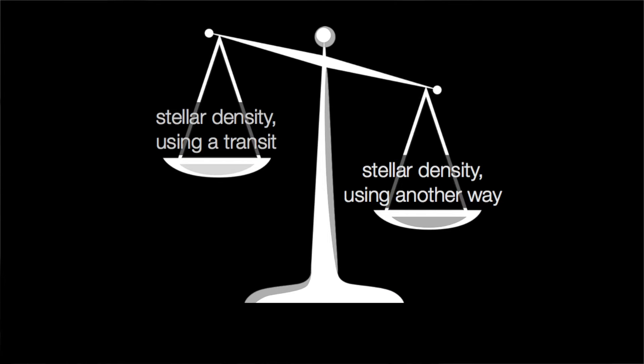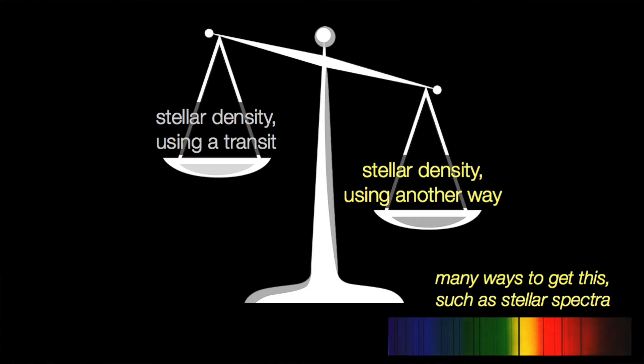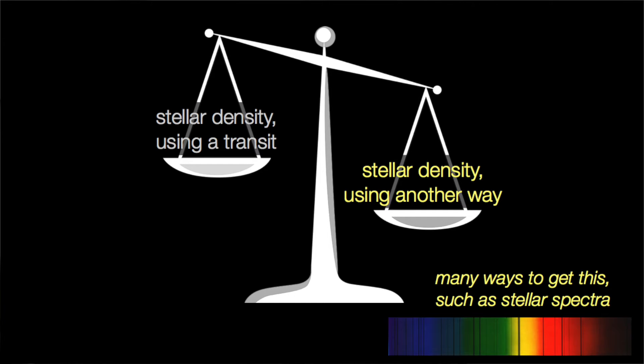So what is it? At its very core, we can define astrodensity profiling as comparing the density of a star as measured from the shape of a transit light curve versus some independent measure. Starting with the independent measurement of stellar density, there are all sorts of ways that astronomers can use to get a handle as to what the density of a star is. We can use information such as the color of a star, its spectrum, and even the pulsations of a star to nail down this parameter. But in this video, I'm going to focus a bit more on that former term, the transit light curve-derived stellar density.